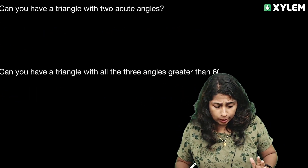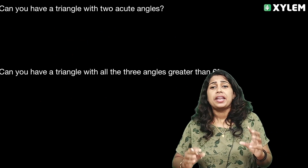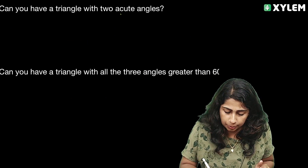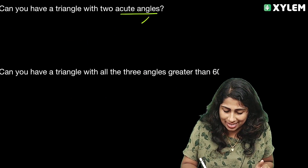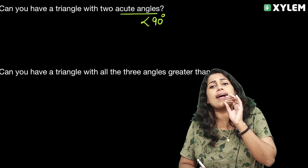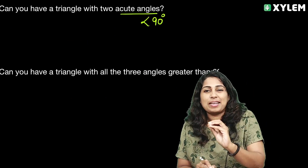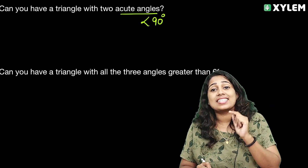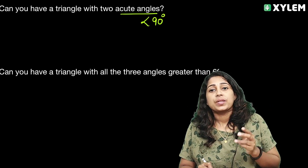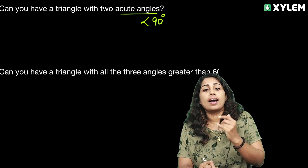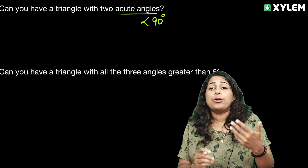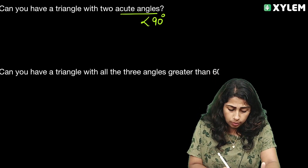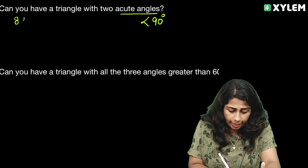Next question: Can you have a triangle with two acute angles? An acute angle is less than 90 degrees. Yes, a triangle can have two acute angles — in fact, an acute triangle has all angles less than 90 degrees, such as 89, 89, and a remaining angle.